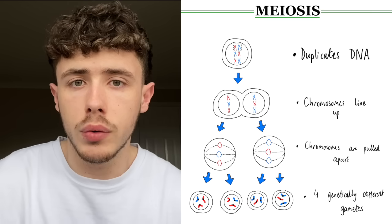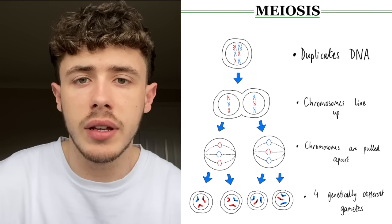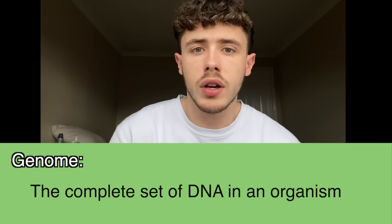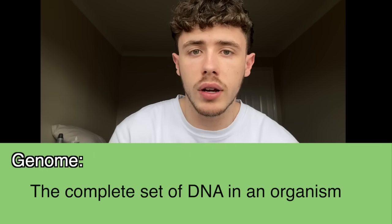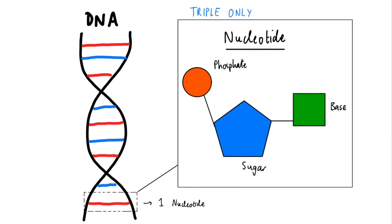A really useful process to know about is called meiosis. This is the production of gametes from different cells. Next, we move on to DNA and the genome. Genome just means the complete set of DNA within an organism. You also need to know about the structure of DNA. DNA is a double helix structure that is made up of multiple nucleotides. Nucleotides are two base pairs, a sugar and a phosphate molecule, as you can see in this diagram.